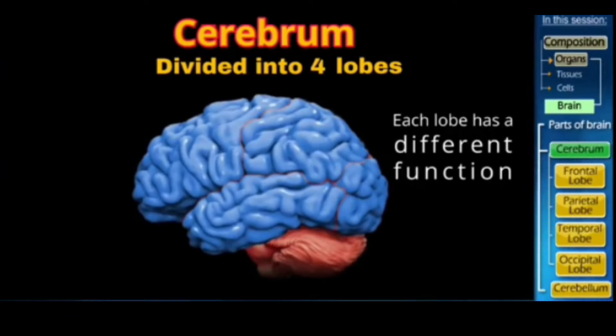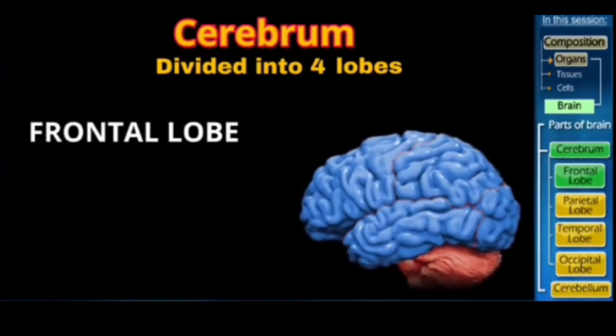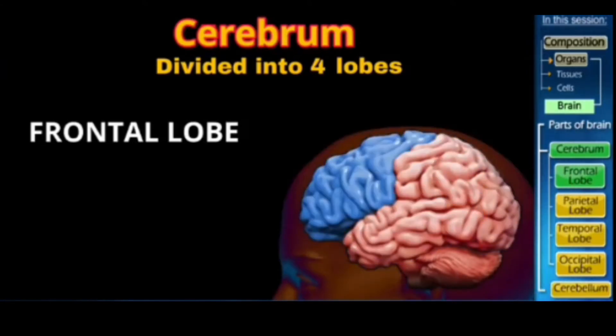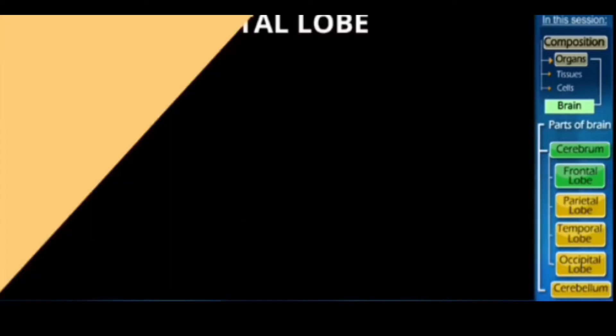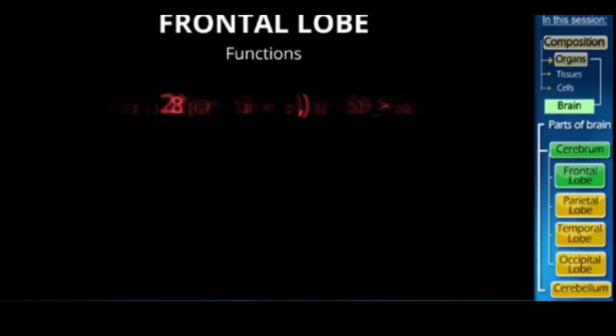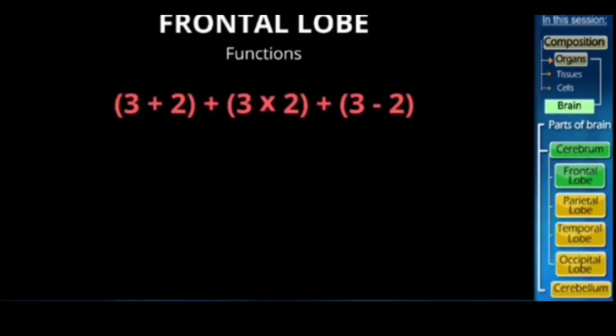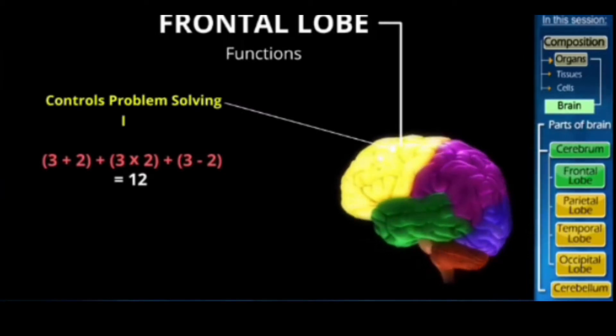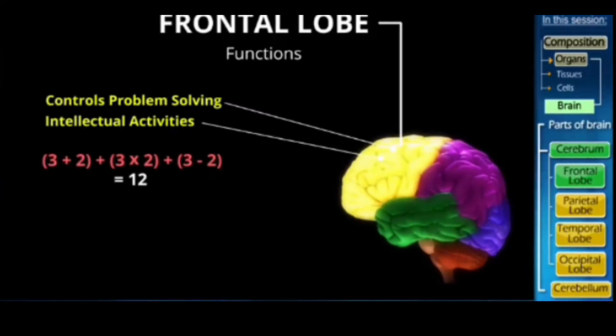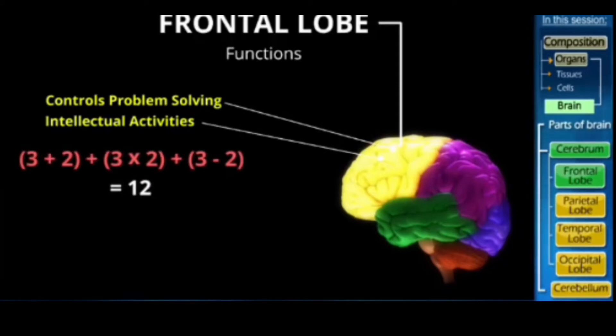The first one is called the frontal lobe. Now just by the name you can guess which one of these can be called the frontal lobe. Yes, it is this one, the one present in the front. Now to tell you its function, let me give you a math problem. Can you calculate the sum? Did you get the right answer? So the frontal lobe controls problem solving.